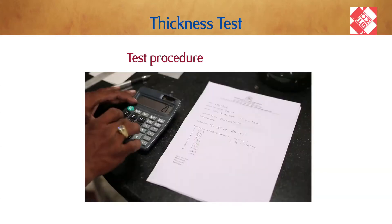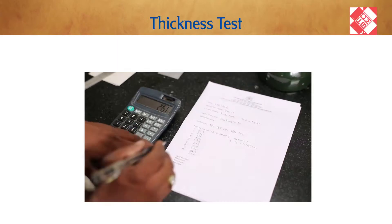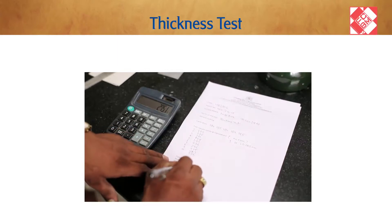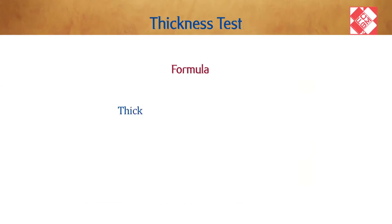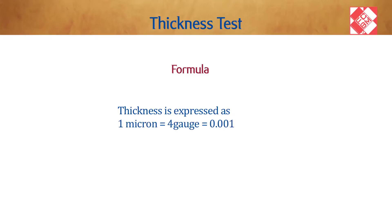Thickness is to be reported in millimeters, microns, or gauge. The unit conversion is expressed as: one micron equals four gauge, equals 0.001 millimeters.